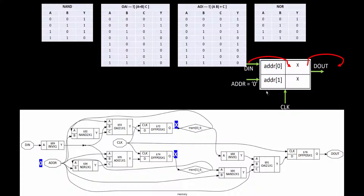Moving on — this is the functionality we are trying to check. At the current point in time, ADDR is 0 as already mentioned. Mem zero (ADDR 0) has a value of X, and mem one also has a value of X — shown as a bus (diamond/rhombus shape) in the diagram. Now we give the positive edge of the clock and see what we get.